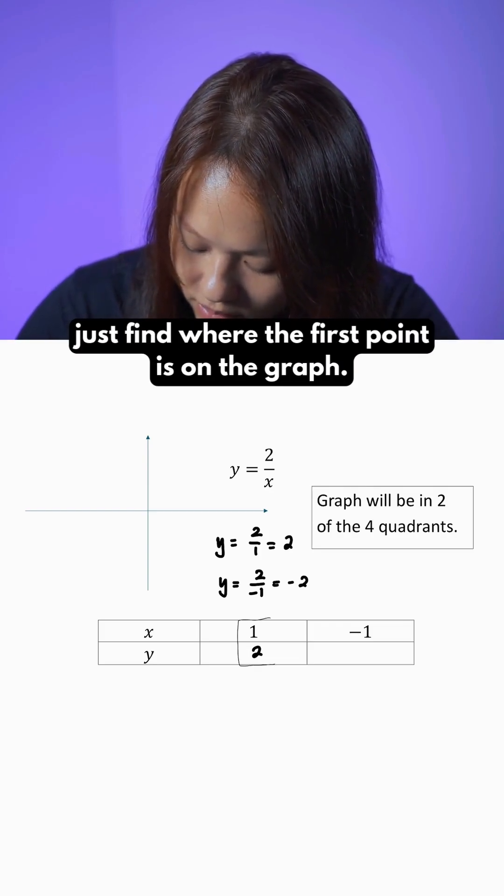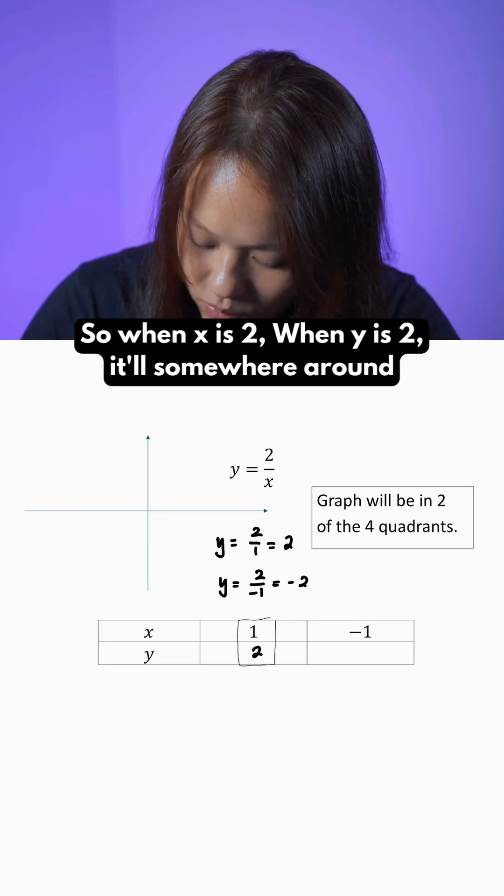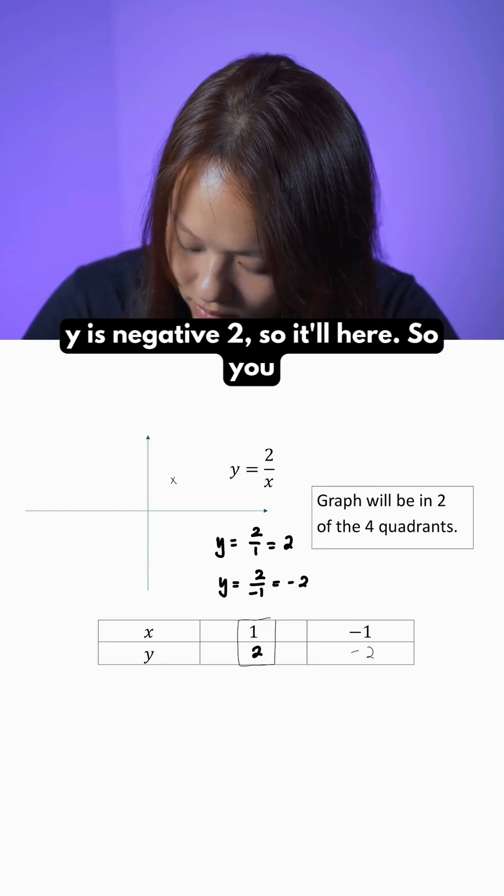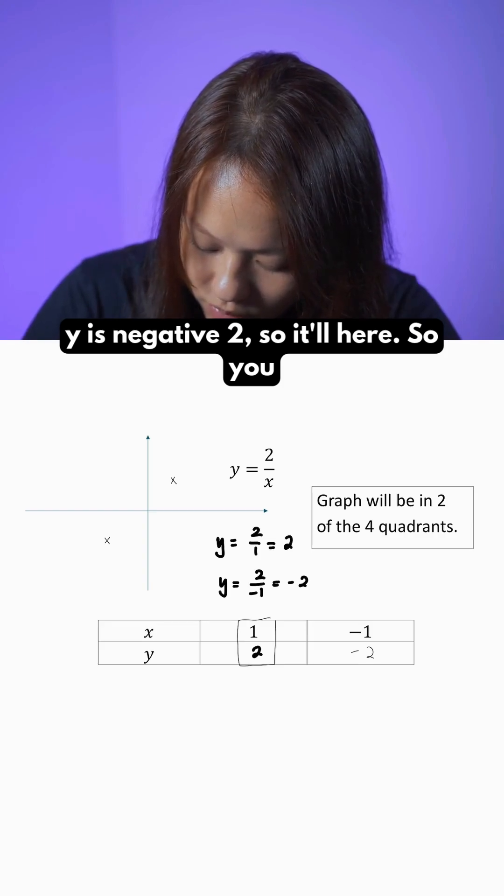So all you need to do is just find where the first point is on the graph. When x is 1, y is 2, it'll be somewhere around here. And when x is negative 1, y is negative 2, so it'll be here.